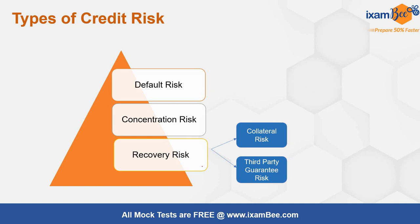Recovery risk is basically: if there has been a default, what are the bank's sources or methods of recovering back that loan amount? That could be through collateral — when banks are lending, they keep a collateral as security, so they can sell or seize the security and try to recover their money. Recovery risk is whether they are actually able to recover their money from the collateral given to them in the first place. There could be legal implications, or the market value of that collateral may have gone down and is not actually covering the loan amount. That is the collateral risk.